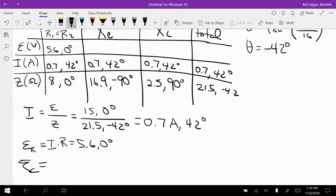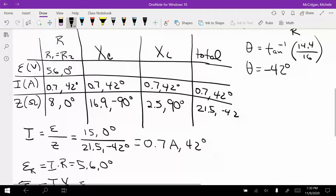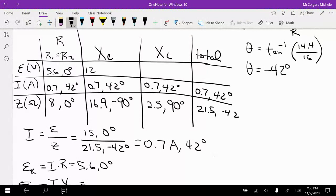E of the capacitor is going to be I times XC. So that's going to be 0.7 times 16.9. And so that's going to be 12. And I'm adding these angles together here. So I'm going to have negative 58 degrees.